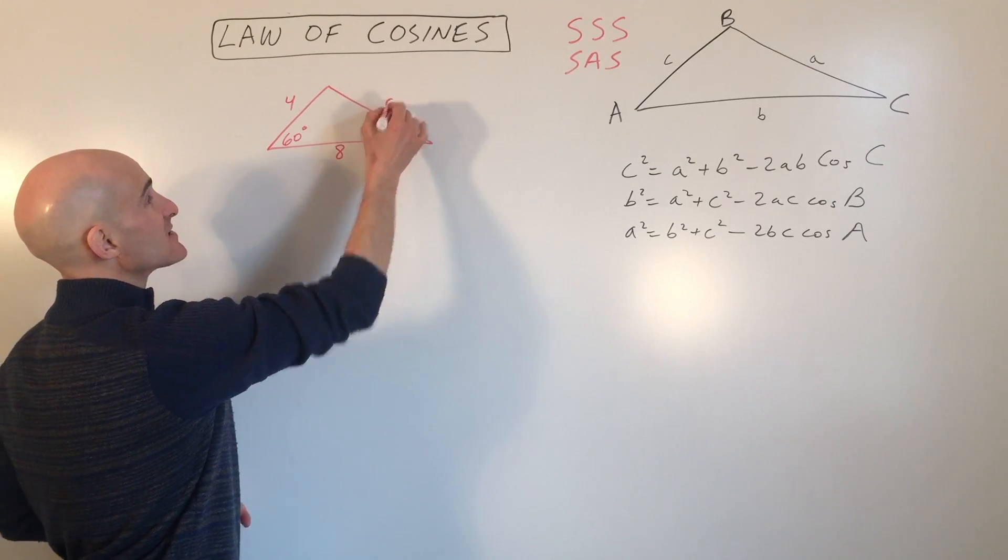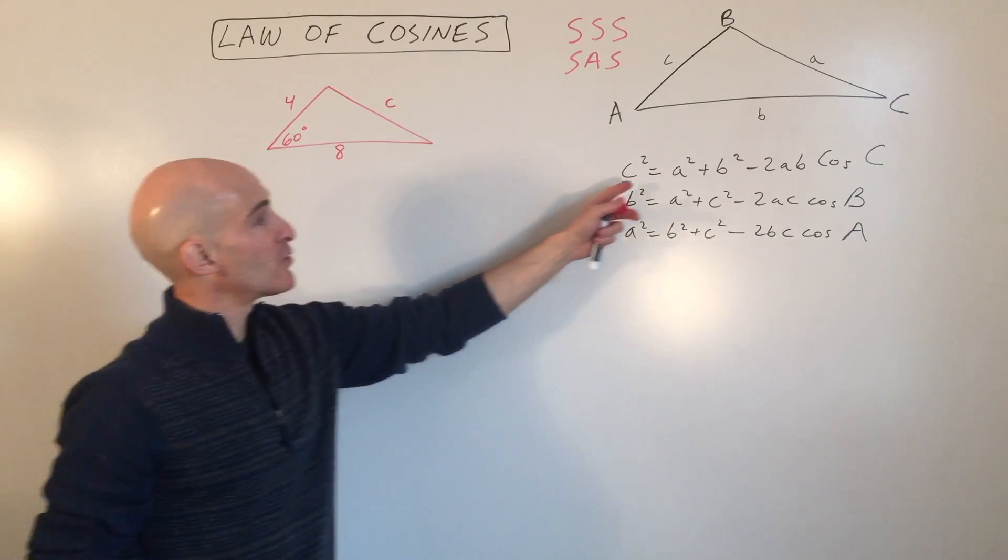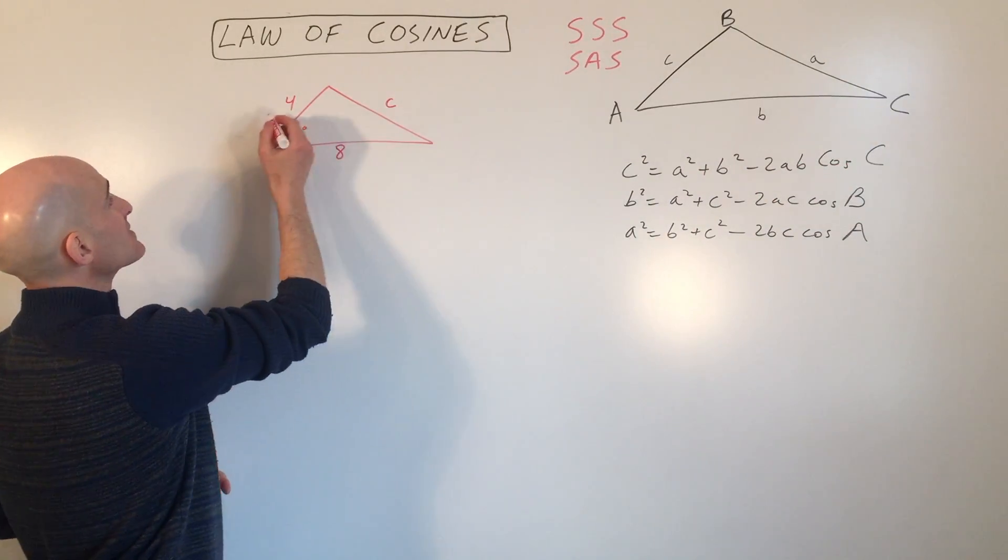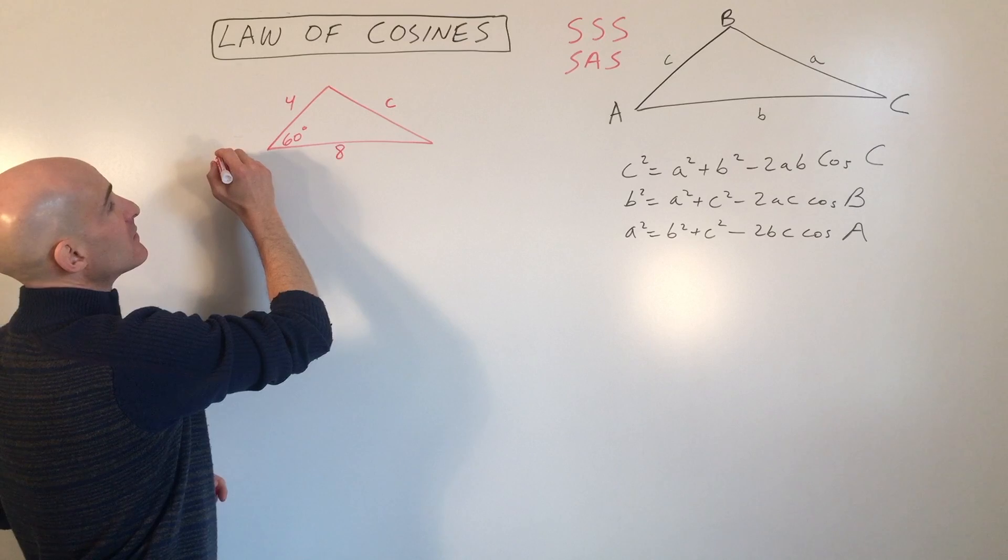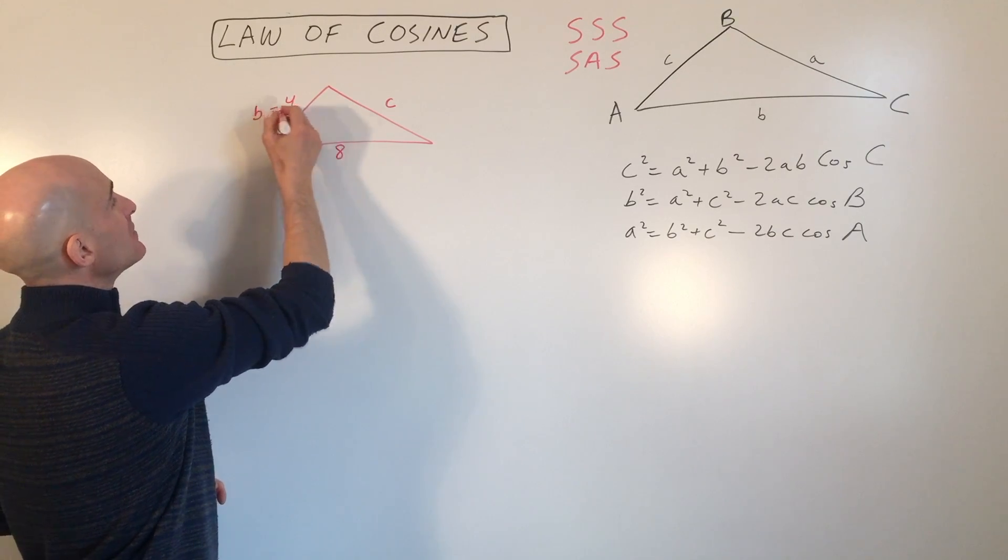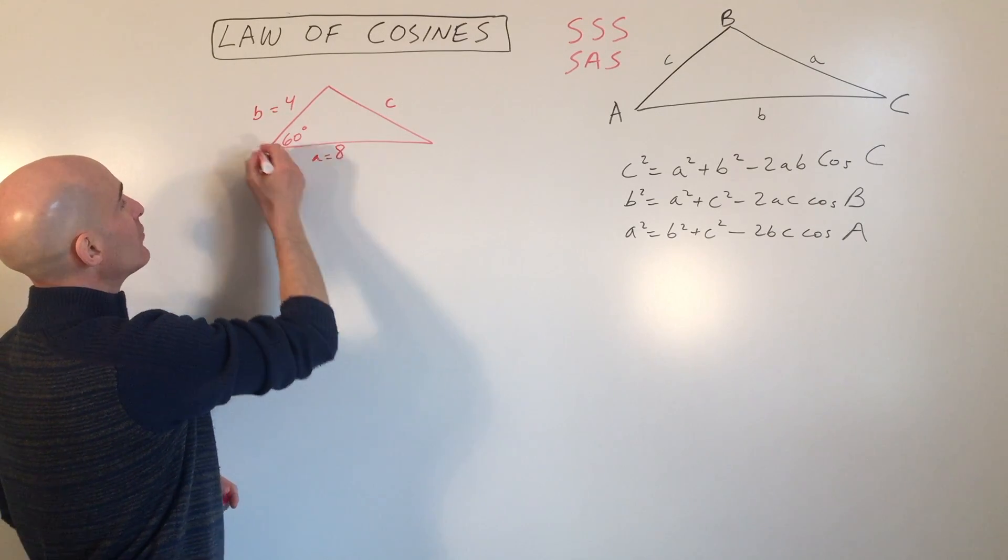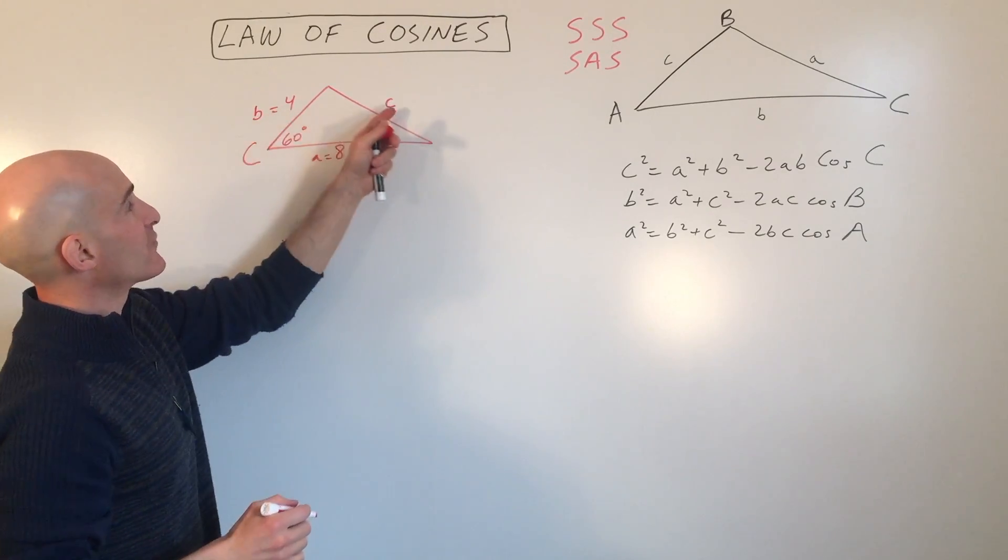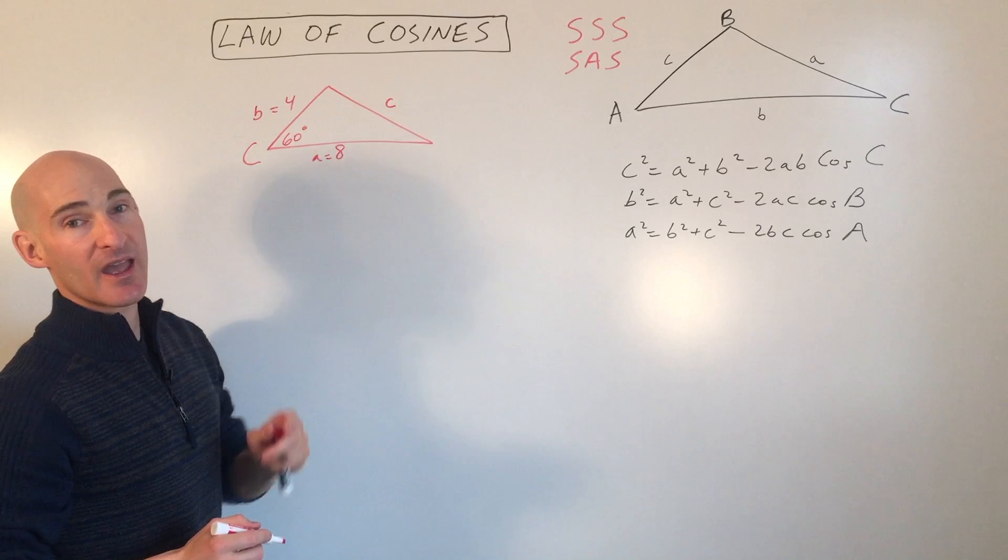So we're going to be working with this top formula here. So that means that this is, we'll call this B, we'll call this A, we'll call this angle C. So you've got A and B and you're looking for side C, it's across from angle C.